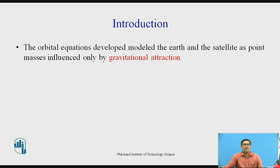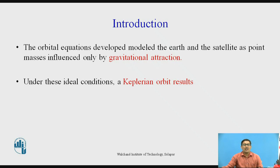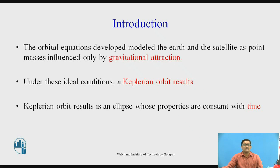Whatever orbital equations were developed by scientists initially, they were based on the assumption of gravitational attraction only. These results are known as Keplerian orbit results. The Keplerian orbit results in an ellipse whose properties are constant with time.